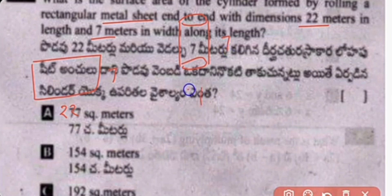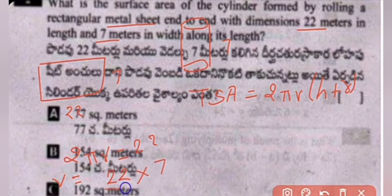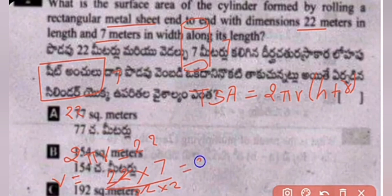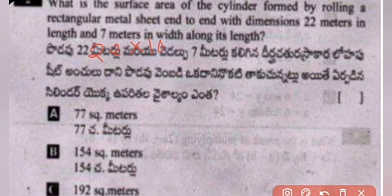The total surface area (TSA) of the cylinder is 2πr(h + r). The circumference 2πr equals 22, so r equals 22 divided by (2 times 22/7), giving r equal to 3.5. The height is 7, so h plus r equals 7 plus 3.5 equals 10.5. Then 2πr equals 22, and TSA equals 22 multiplied by 10.5.